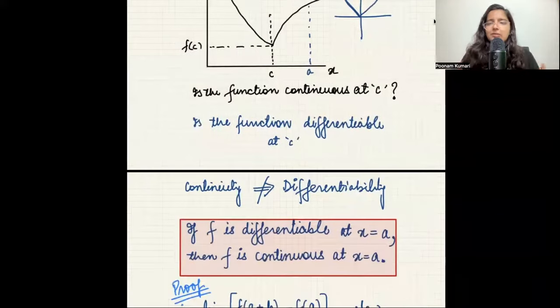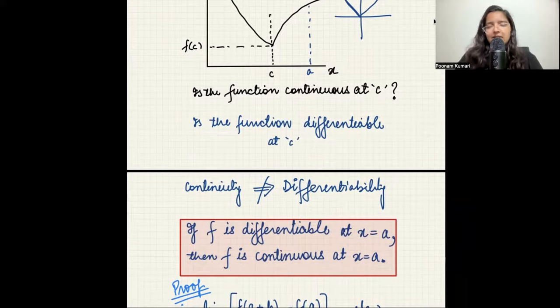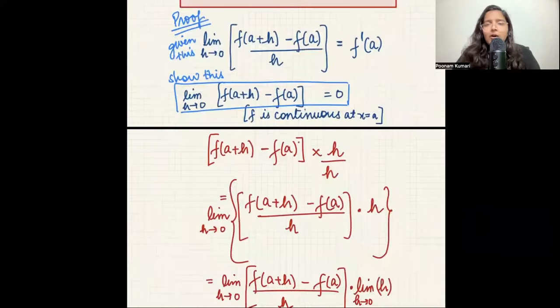To summarize what we've learned today: continuity does not ensure differentiability, but differentiability does ensure continuity. We also learned what left derivative and right derivative are, and how to determine whether a function is differentiable at a particular point. That's it for today's lecture. In our next lecture, we will discuss sequence and series and topics related to discounted values. If you're enjoying and learning from these videos, please subscribe, like, and share. Thank you so much and take care.